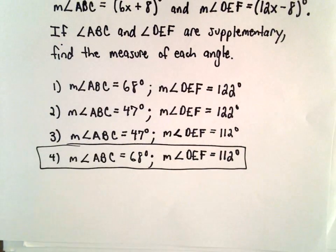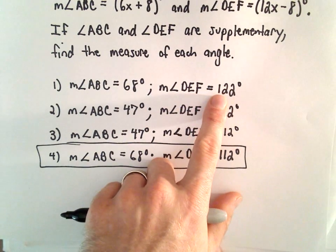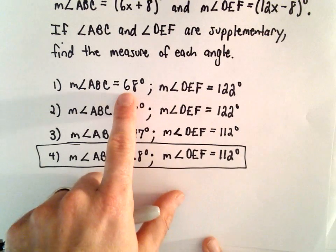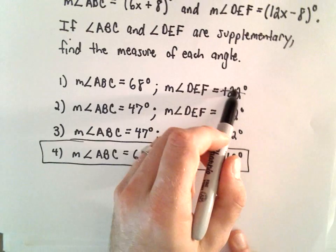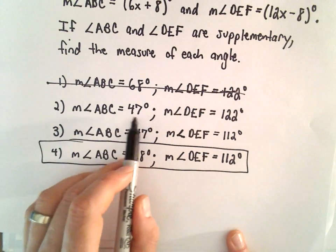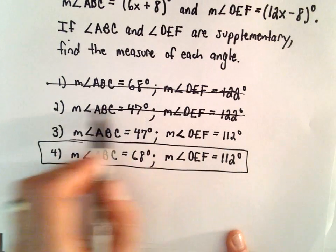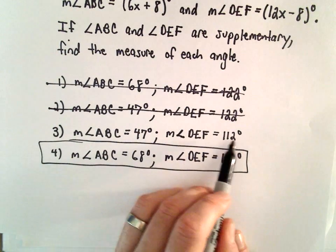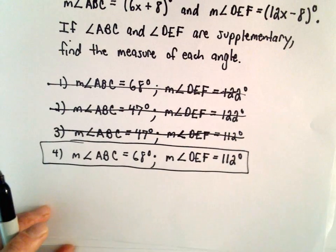You could even immediately rule out, for example, answer choice number 1, because if you add them together, you notice 68 and 122 would actually give you 190. So right off the bat you know you could say that's not right. And really notice the same thing with the other two. If you add 47 and 122, you wouldn't get 180. 47 and 112 - that's also not going to give you 180.